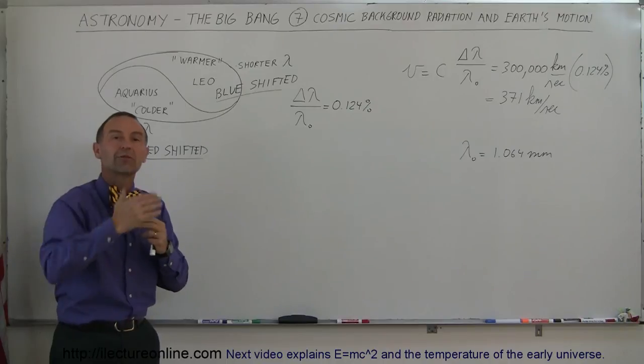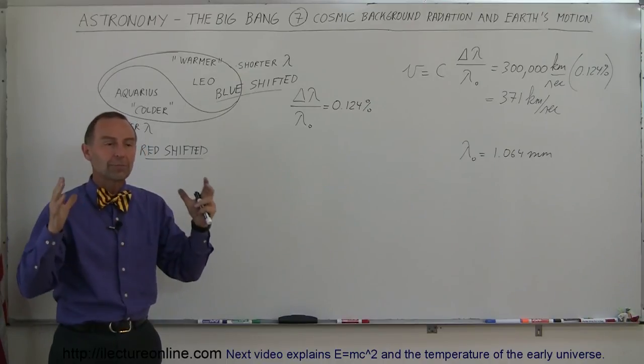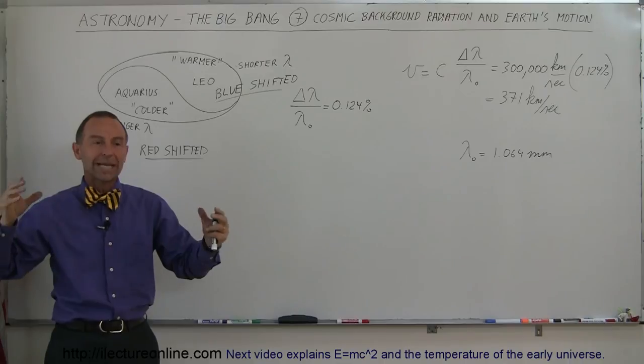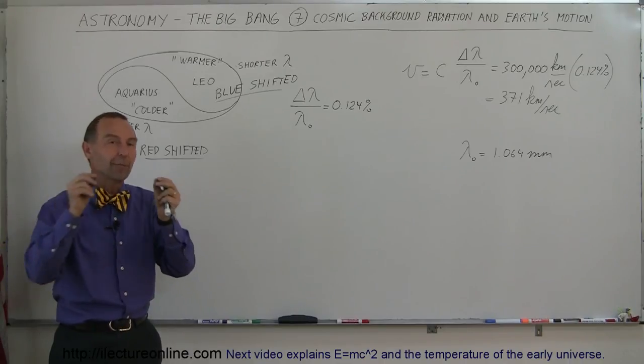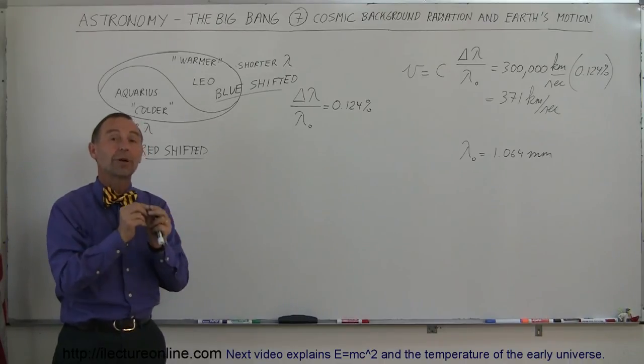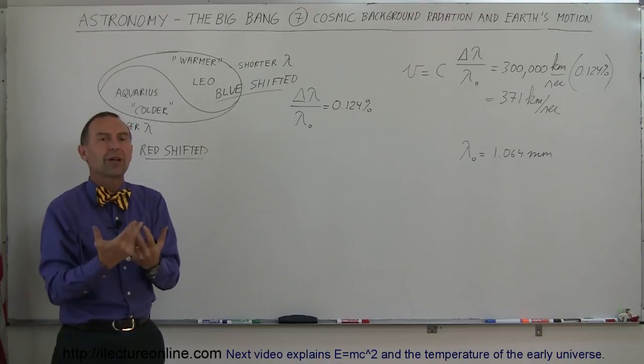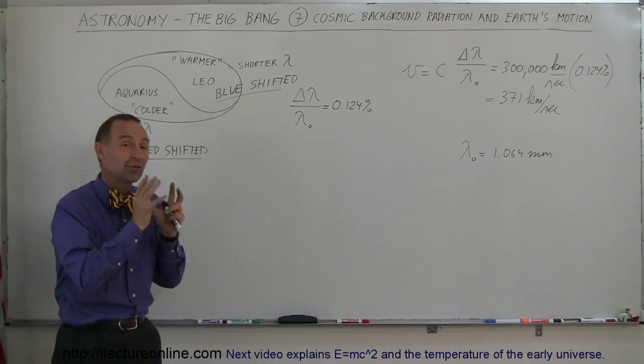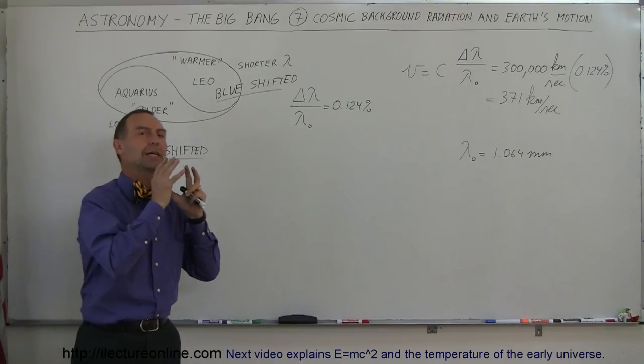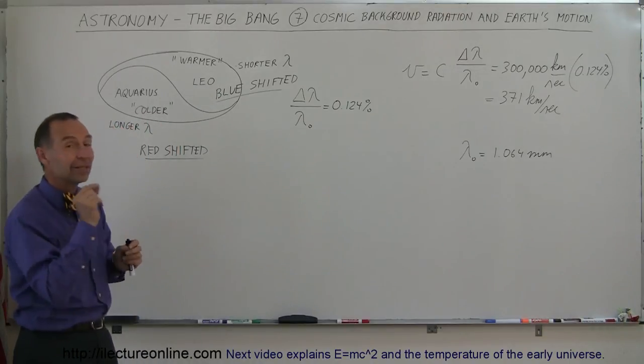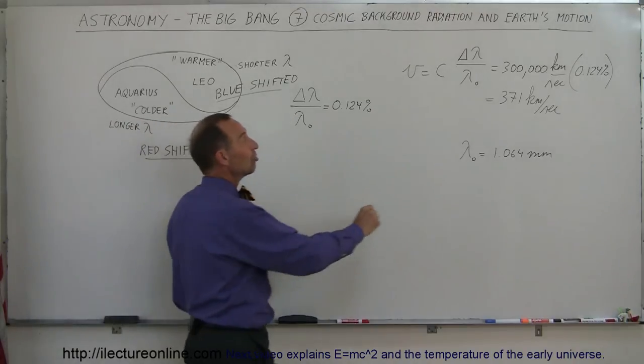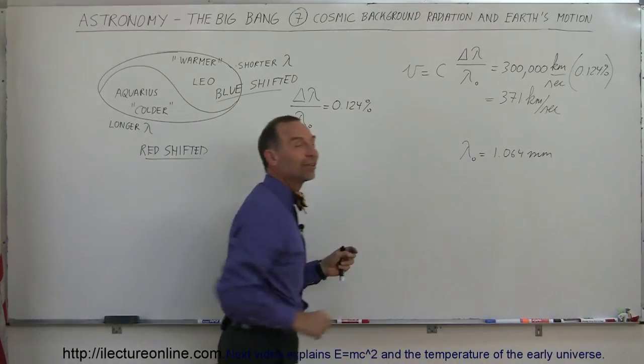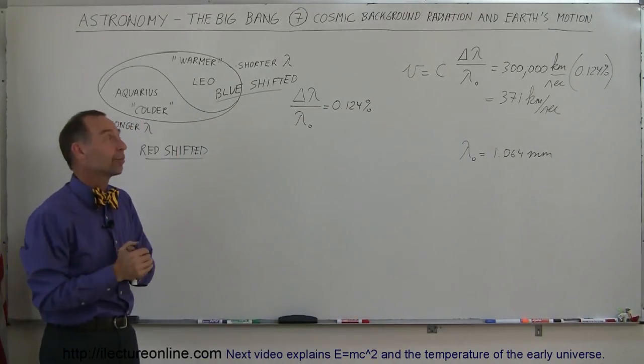So 13.8 billion years of stretching that radiation, we can then imagine at the very beginning of the universe how uniform that radiation must have been. Absolutely phenomenal. How did that happen? No idea, but we do know that it must have been extremely uniform and extremely hot at the beginning of the universe, such that we can now detect small changes in speed of the earth relative to that radiation of 371 kilometers per second.